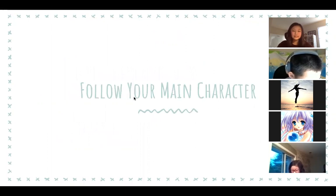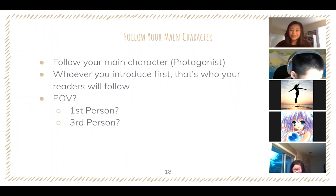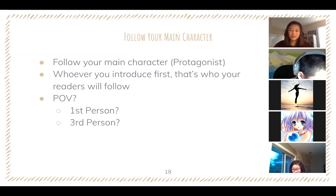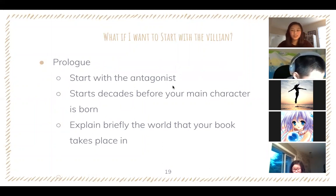The second element is to follow your main character or protagonist. Whoever you introduce first is who readers will follow — this is a key difference from short stories. In a novel, main characters are typically introduced first. This is also when you should decide on point of view and tense: first person, third person limited, or third person omniscient. You generally shouldn't write in second person unless you're doing a choose-your-own-adventure book.